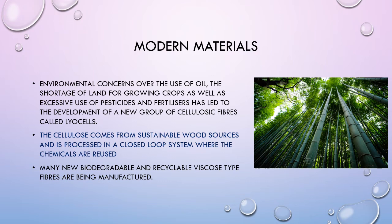Modern materials have been developed in response to environmental concerns over the use of oil, the shortage of land for grain crops, and excessive use of pesticides and fertilisers. This has led to the development of a new group of cellulosic fibres called lyocells, where cellulose comes from sustainable wood sources and is processed in a closed-loop system where chemicals are reused. Many new biodegradable and recyclable viscose-type fibres are now being manufactured, with bamboo being one of the newest.